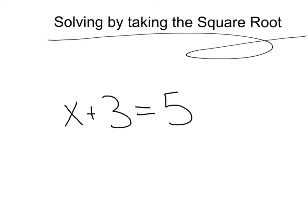When first learning how to solve equations, you learn to do inverses, or the opposite, and to keep the equation balanced. Say we wanted to solve for x — we have x plus 3. We could do the opposite of that, minus 3, but we've got to do it to each side of the equal sign to keep it balanced. That would give us a solution of x equals 2.